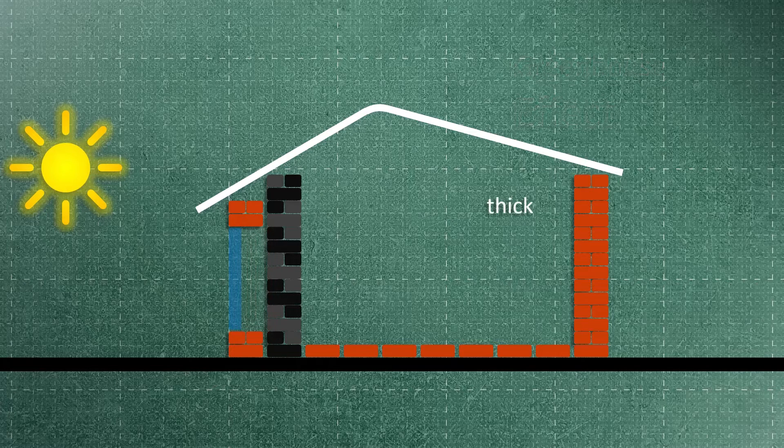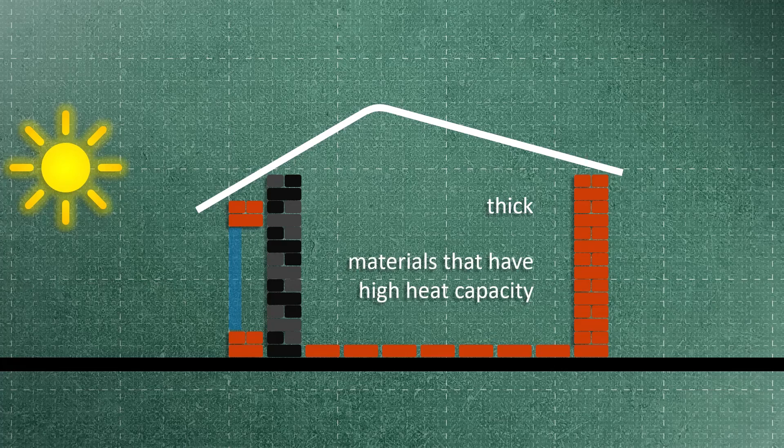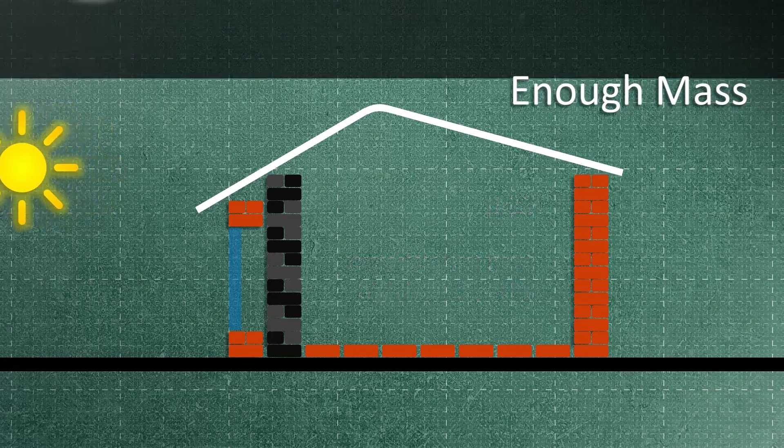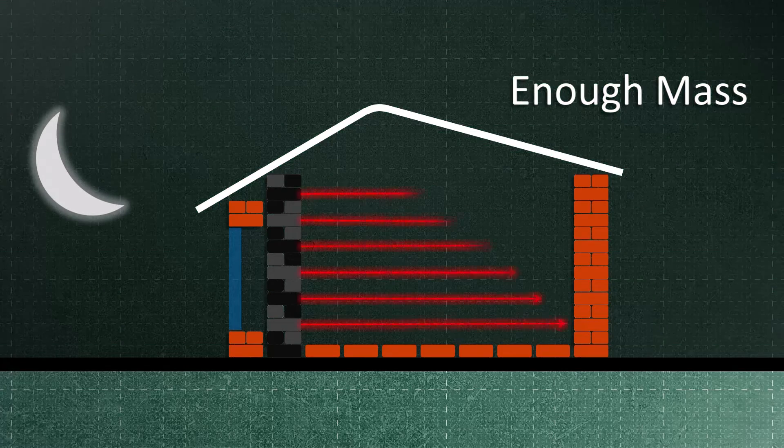Trombe walls are made thick and with materials that have high heat capacity. Therefore, if we have a wall with enough mass, the wall can function as a heater all night long.